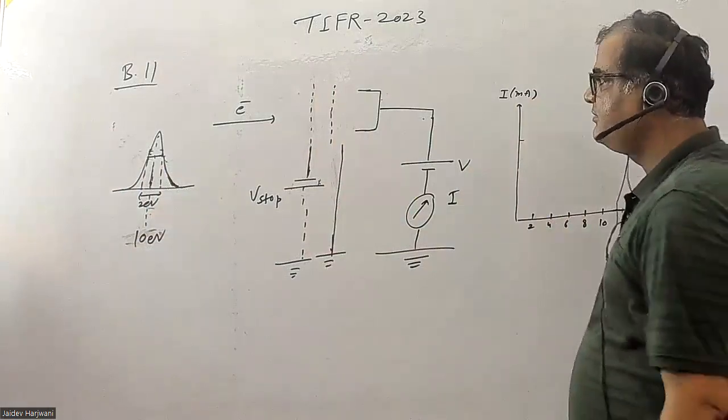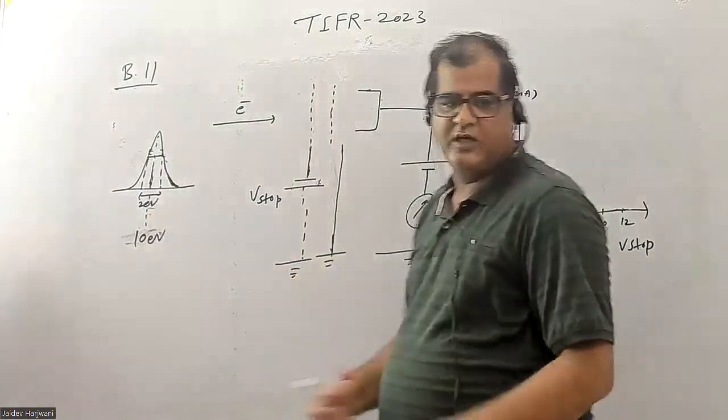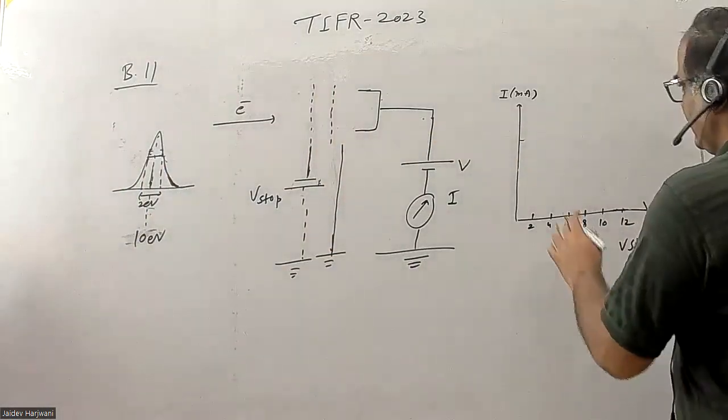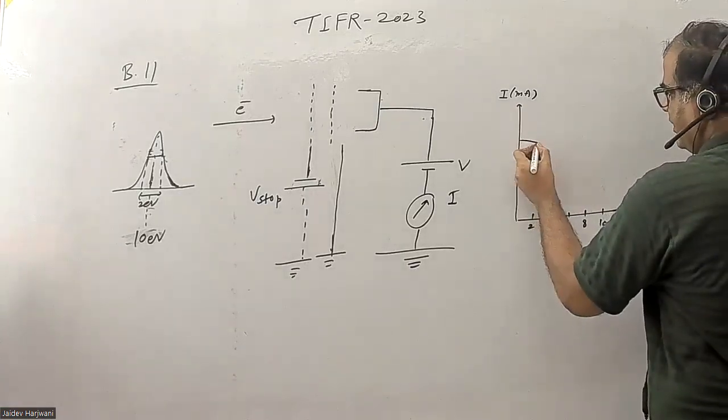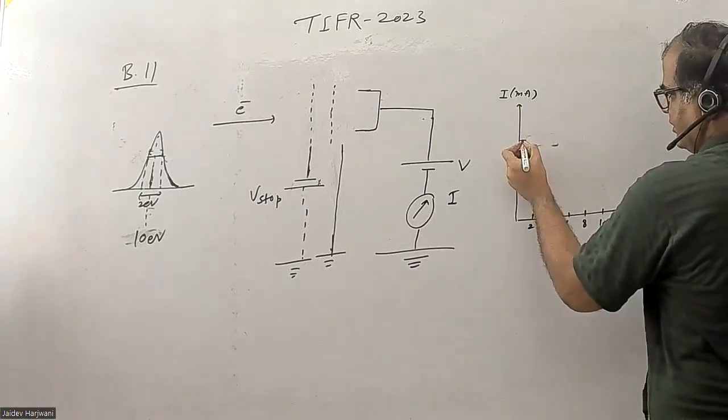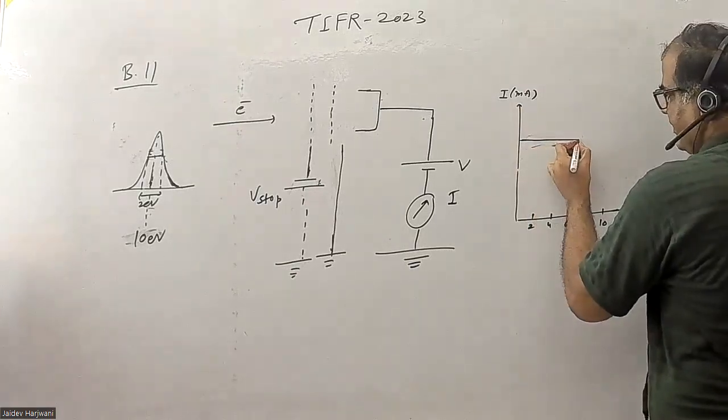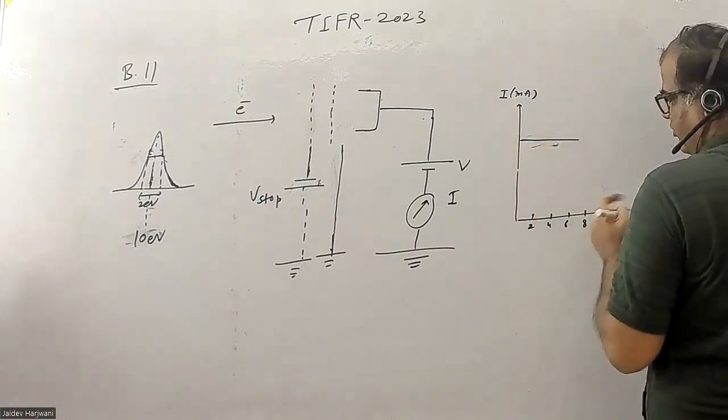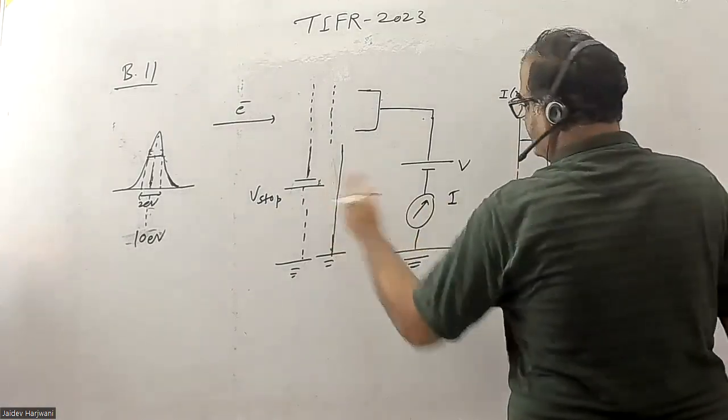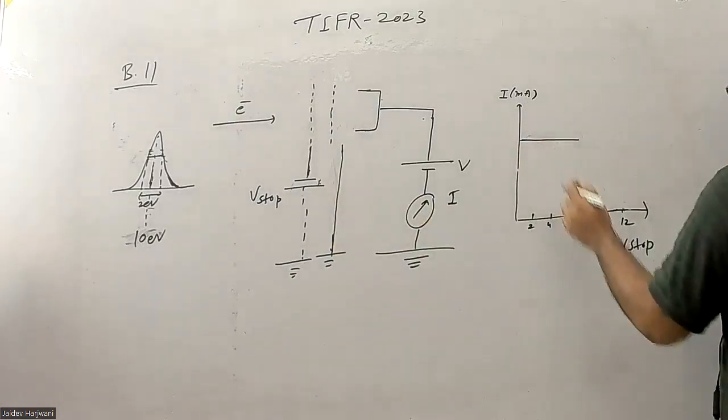You have to see here the energy minimum is around 8 electron volts, so up to 8 volts there will be no drop in the current because minimum energy is 8 electron volts. You need 8 volts, and once you go beyond 8, slowly the current will start decreasing.